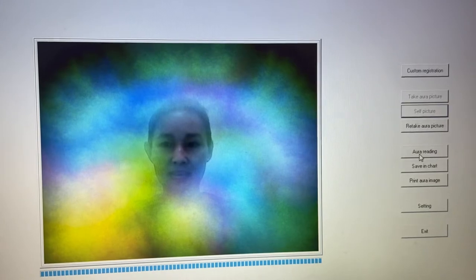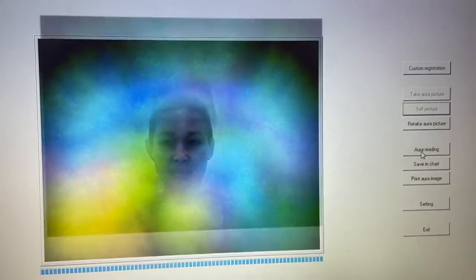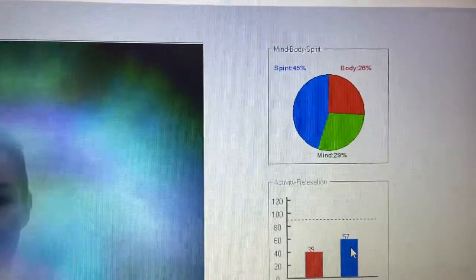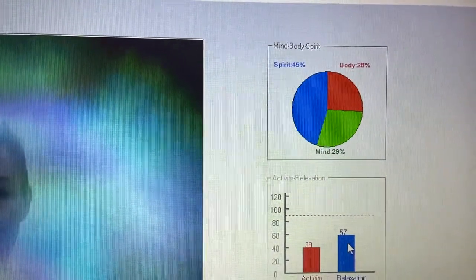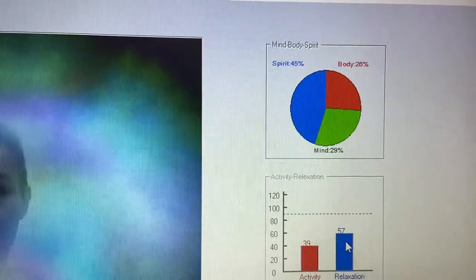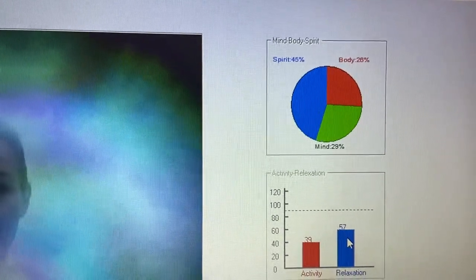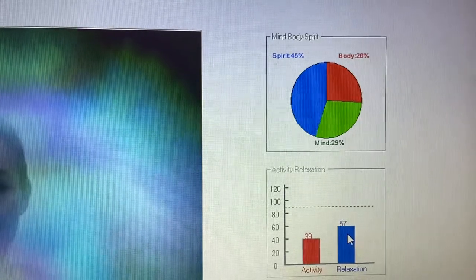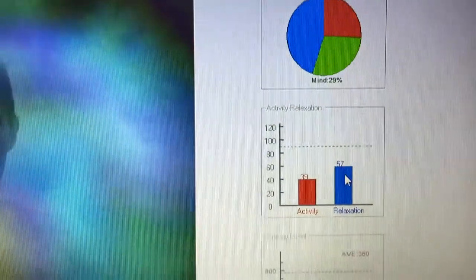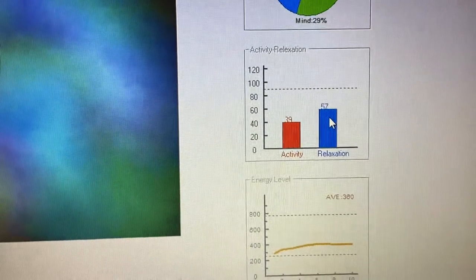So if I click on this, we're going to see the chart. Now the chart's going to give us more information. You can see I'm not that balanced. I'm a 45 spirit, my mind's at 29, that's about 30, and my body's at 26. So that's a lot of spirit, a lot of head activity. And you can see I'm way more relaxed than I'm active.